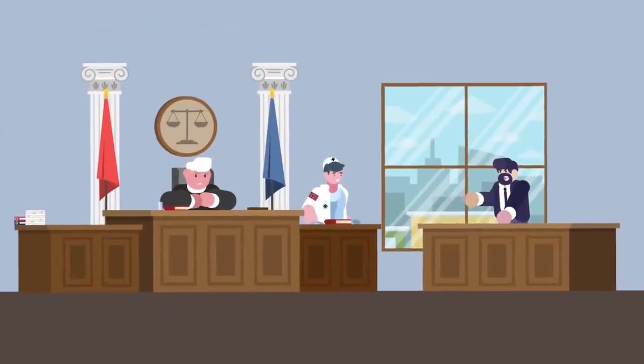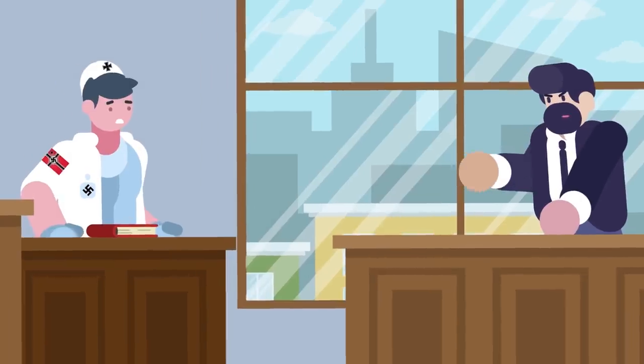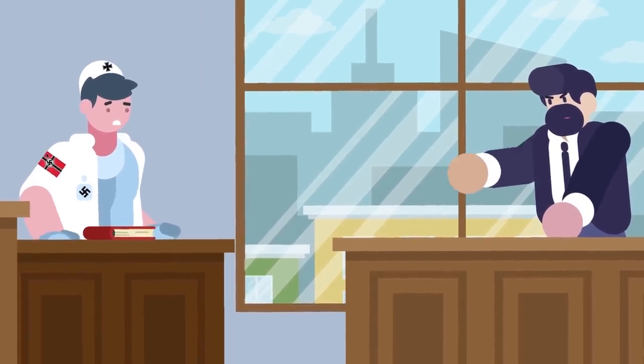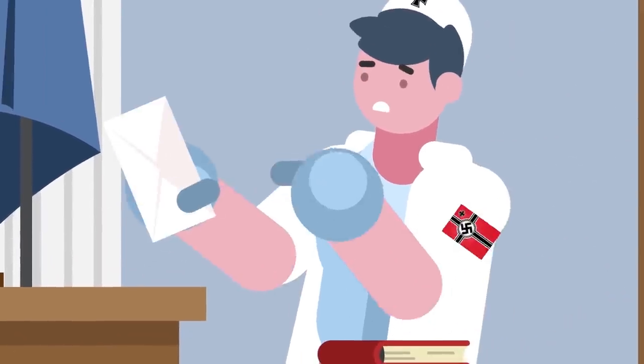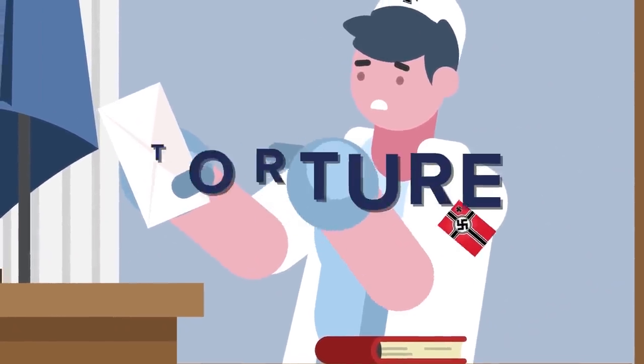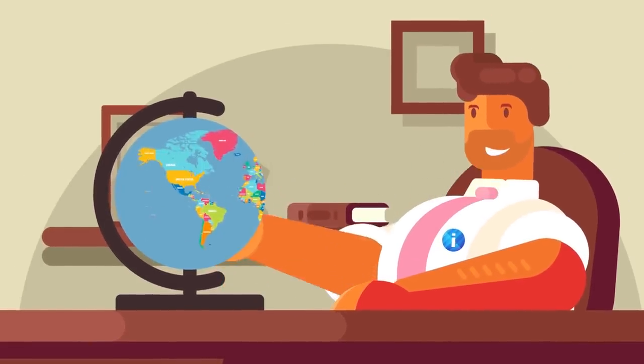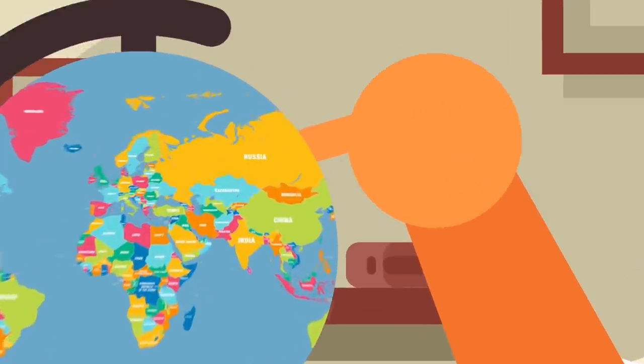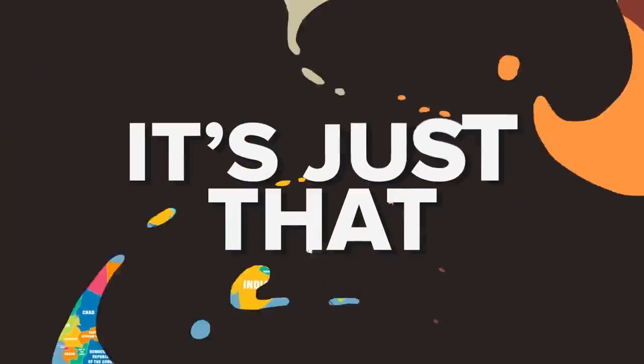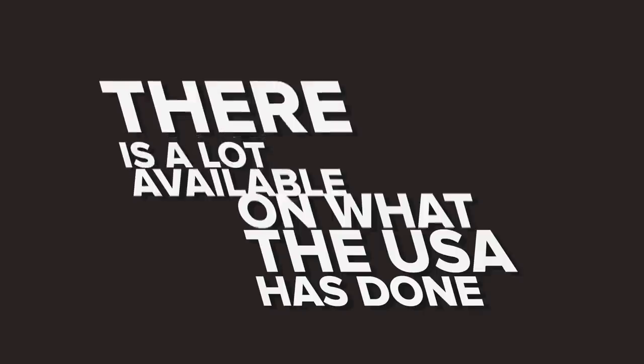In the book it is also written that during the Nuremberg Trials, Nazi doctors who had done a lot of awful stuff themselves, tried to justify their work by using the American scientists in the Philippines as an example of similar malpractice, torture. We should say here that we haven't purposefully picked out the USA, and no doubt awful experiments have been done elsewhere. It's just that there is a lot of literature available on what the USA has done.